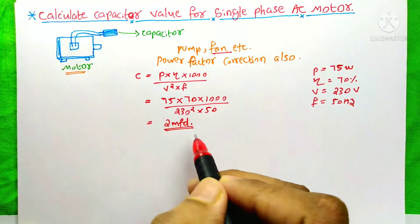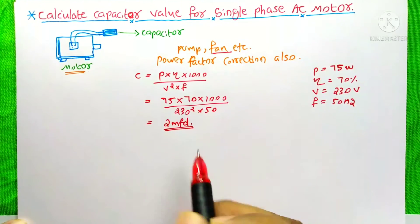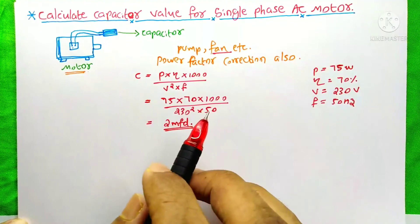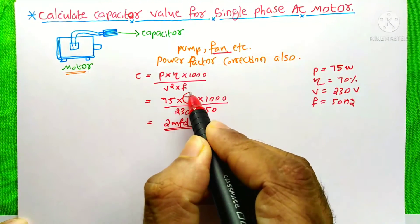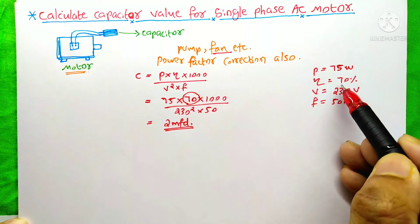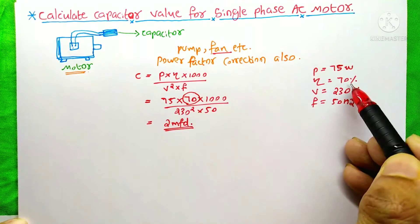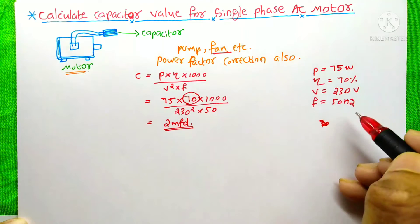In this calculation, one thing you must keep in mind is the value of efficiency. The value of efficiency is 70 percent, which is actually 0.7, but in this equation we just put the value 70 only.